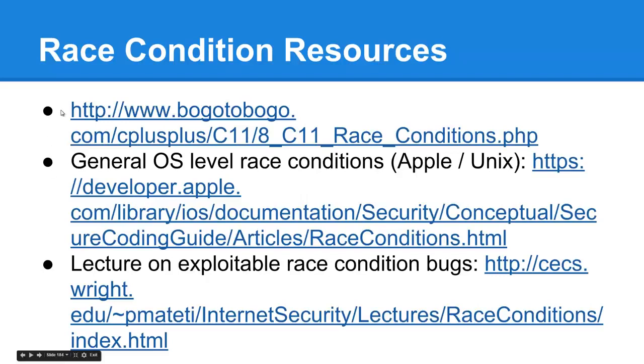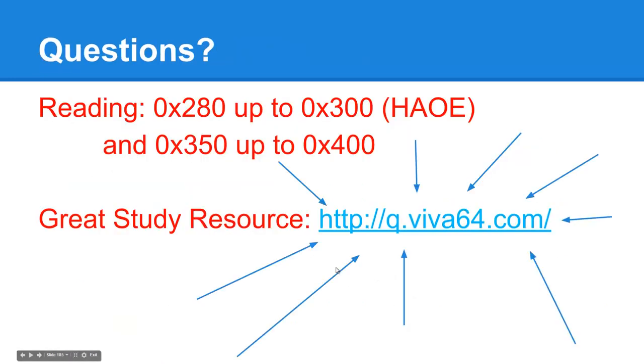Here are some good resources on general race conditions. The first one is a link to a guide on how to handle race conditions and do shared object interactions safely in the latest C spec, the C11 standard. The second link is to general operating system level race conditions, which applies to Linux and Unix systems. This third link is a lecture on exploiting race condition vulnerabilities. It's pretty interesting and it's a quick lecture.